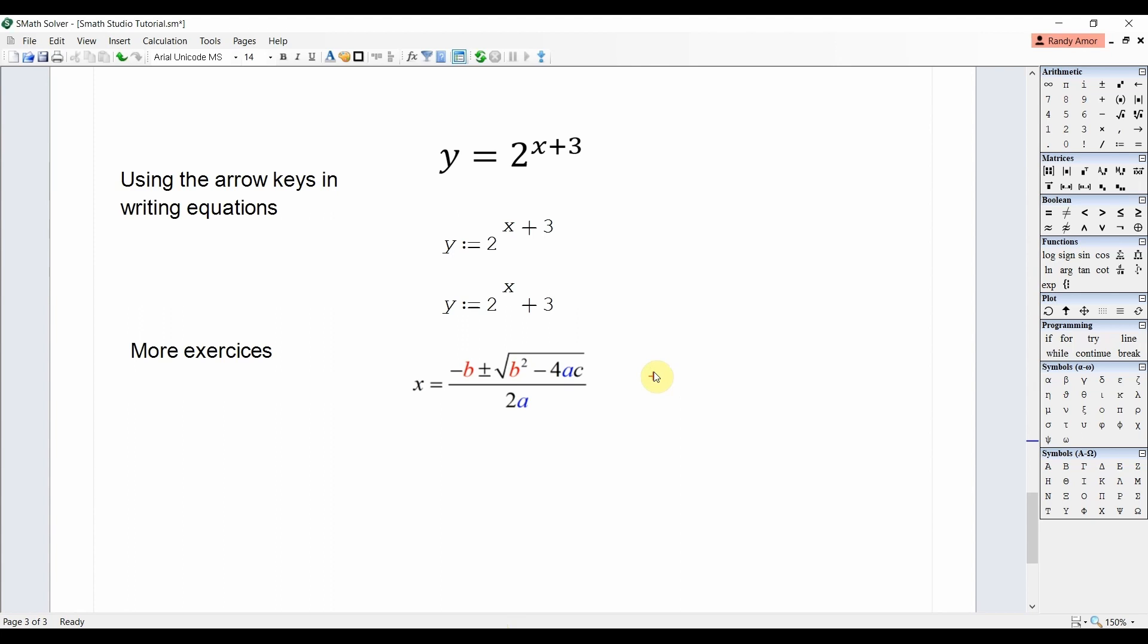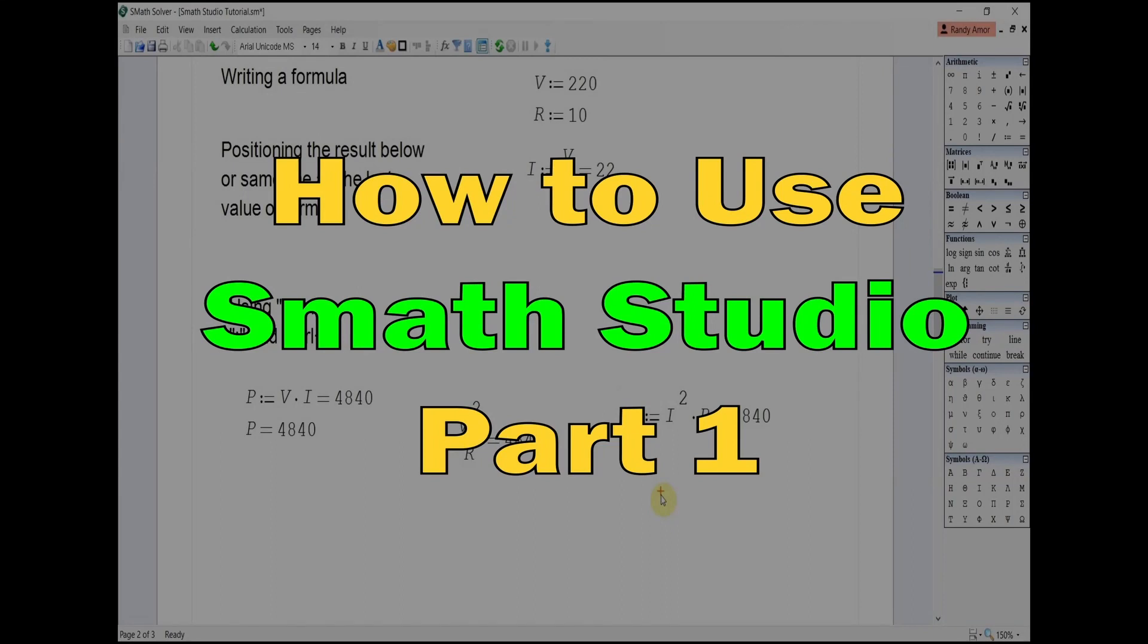Now, let us try typing the quadratic formula. Type x equals negative b and then click the plus and minus sign in the side panel. Then type backslash b and then press the right arrow key once, followed by negative 4 times a times c. Now, to divide the whole term by 2a, press the right arrow key several times until the whole term is underlined. Then press forward slash 2 times a. That's it for this video about the basics of Smath Studio.